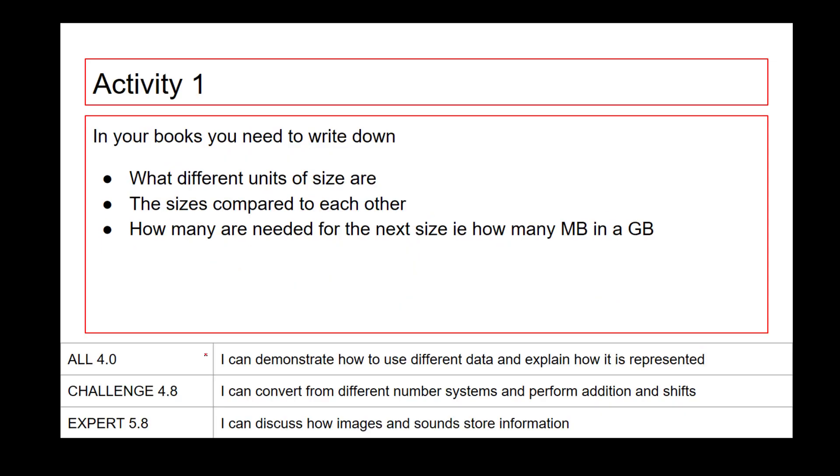So the first thing that you need to do is what are the different sizes of units, get that in your book, the sizes, and then how many are needed for the next size, so how many megabytes in a gigabyte, gigabytes in a terabyte, terabytes in a petabyte. Have a quick pause for the video, and then we're going to crack on.